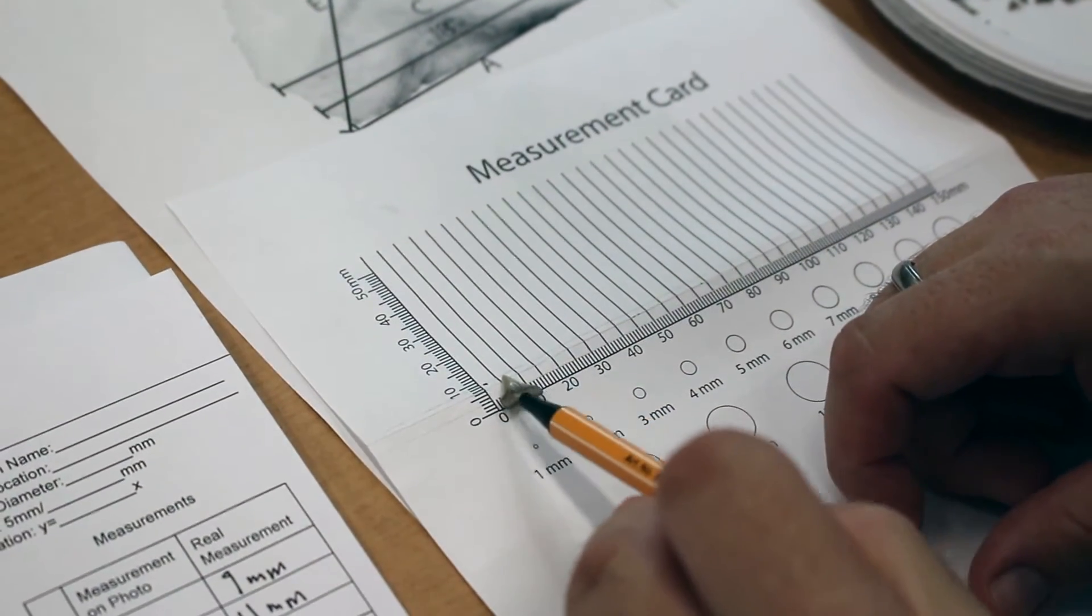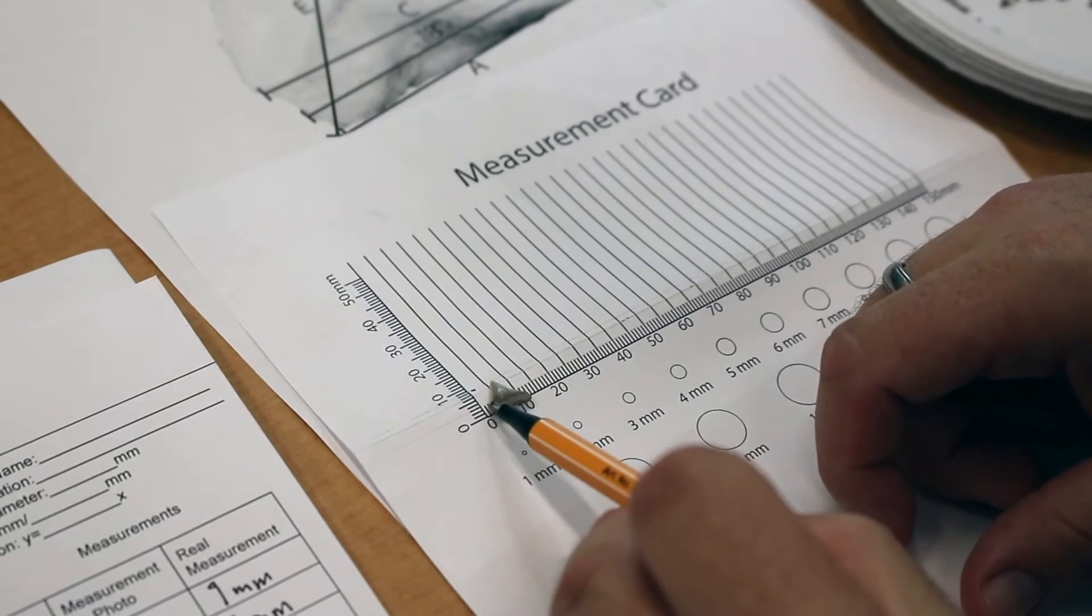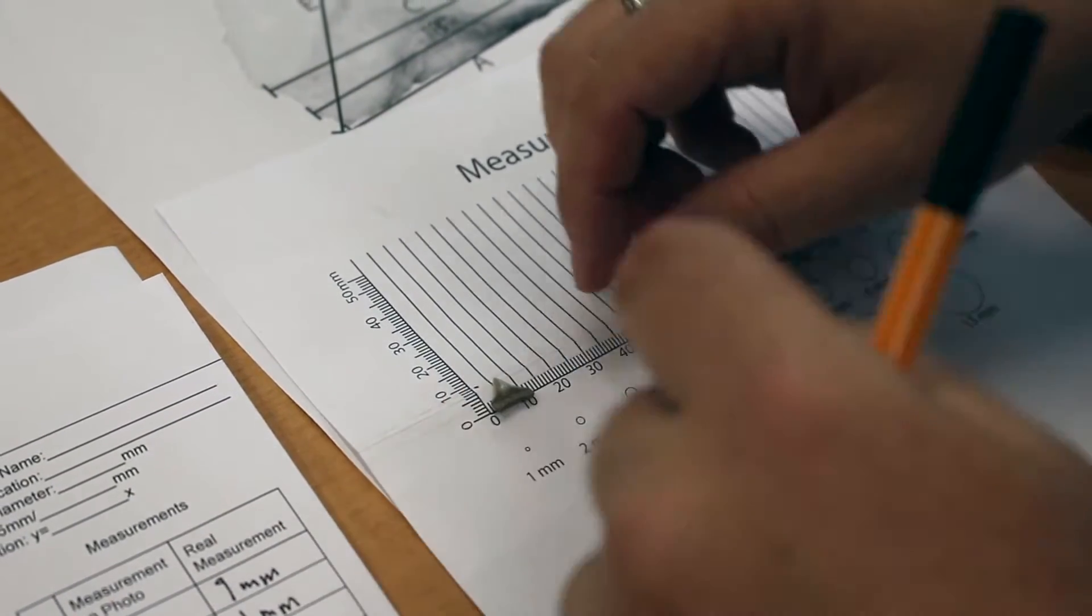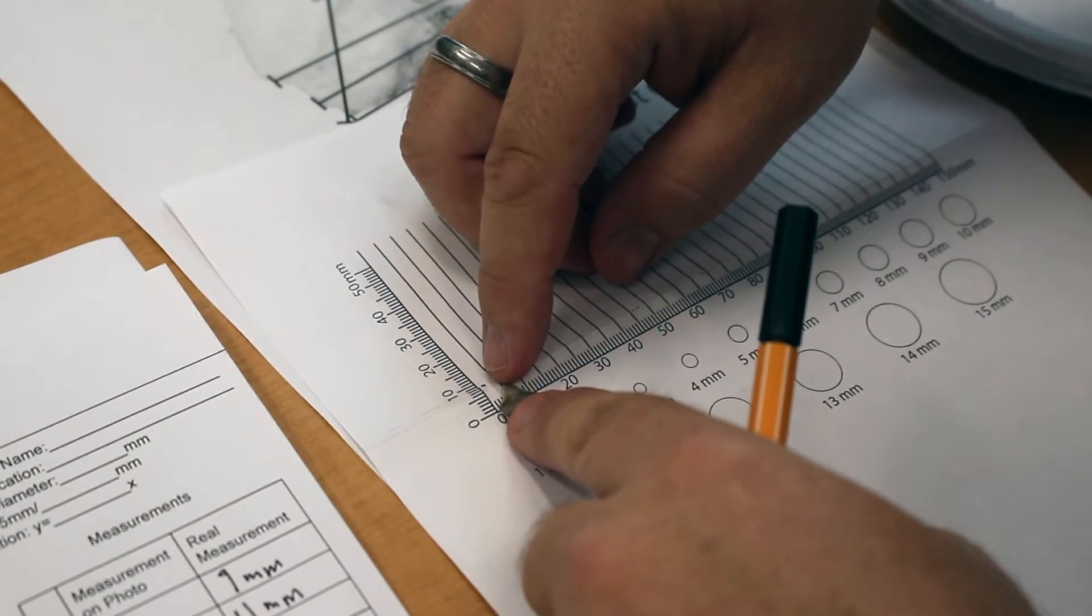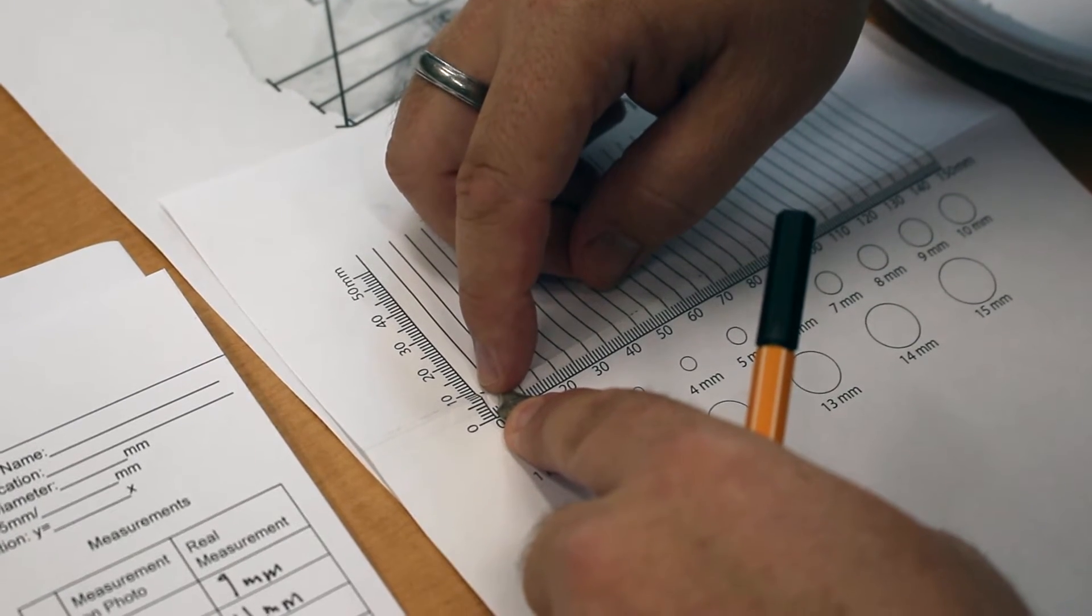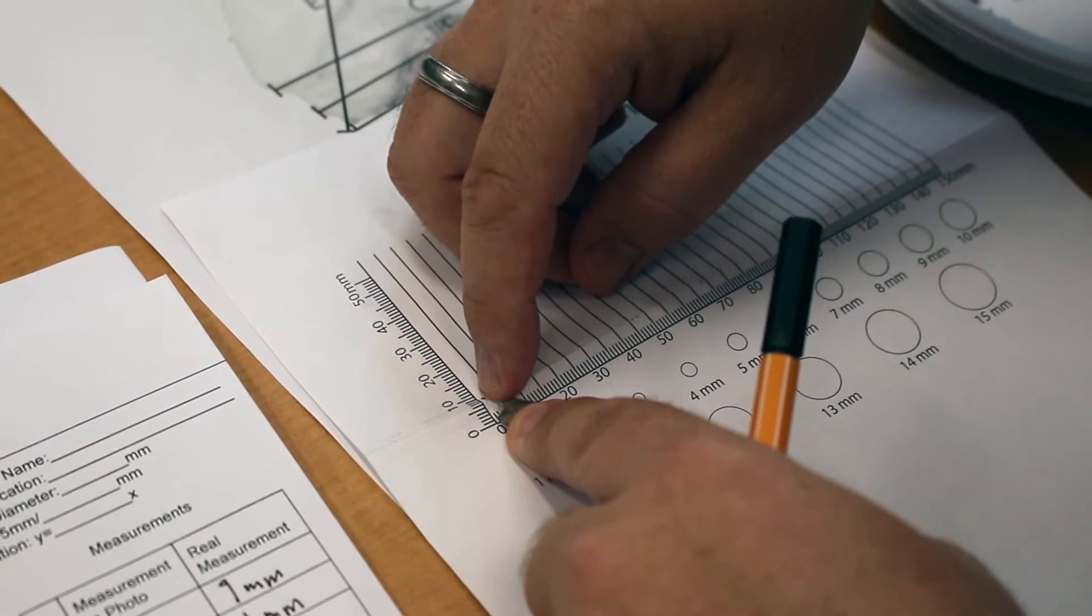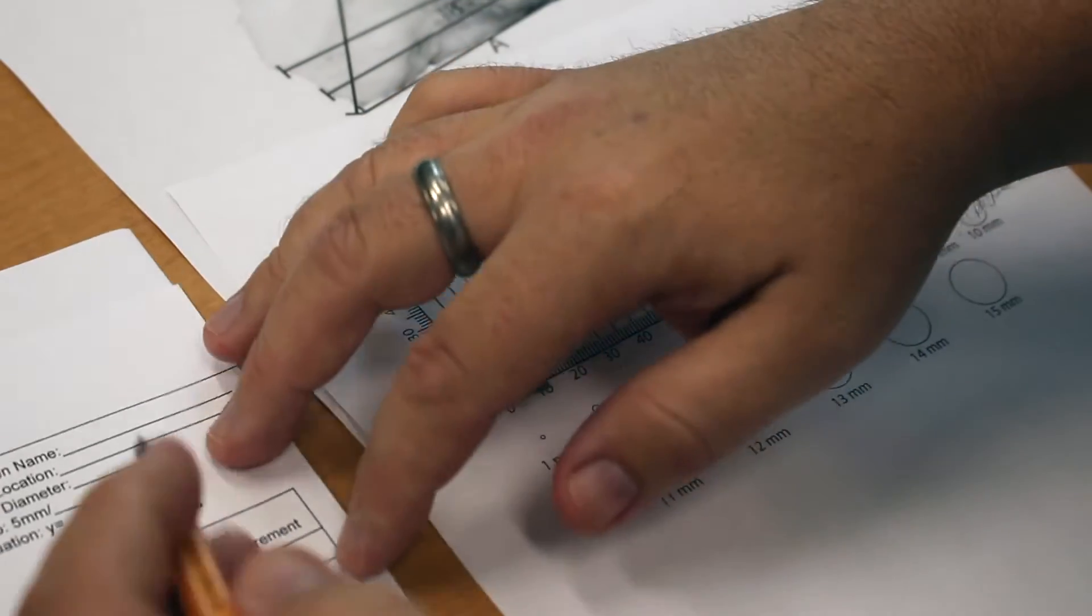Measurement C is the line straight across where the cusp meets the root on either side. And this is going to be a very similar measurement on this tooth. That is 9 millimeters again.